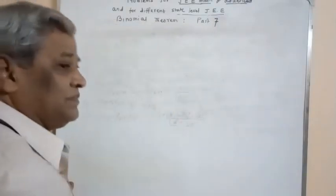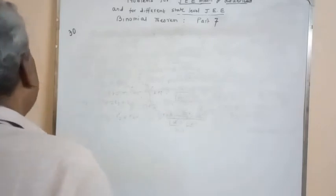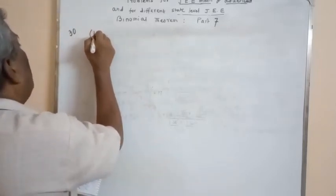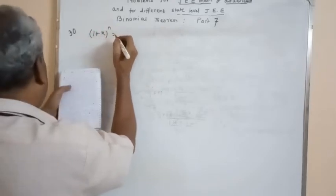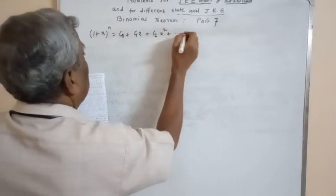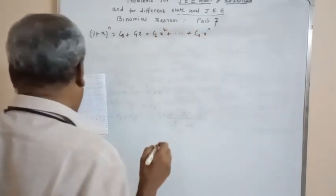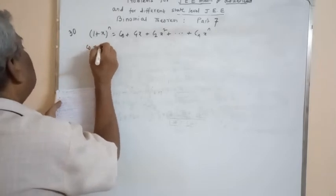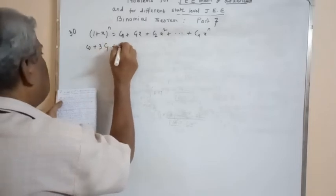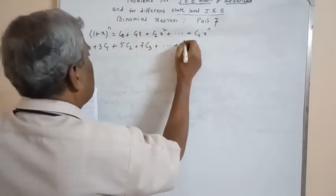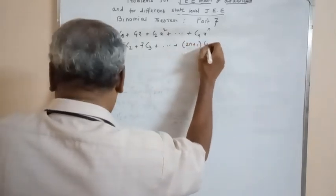Welcome. Today is part 7 of the chapter Binomial Theorem. Today's first problem is problem number 30. The problem is: if (1+x)^n = c0 + c1x + c2x² + ... + cnx^n, then find the value of c0 + 3c1 + 5c2 + 7c3 + ... + (2n+1)cn.